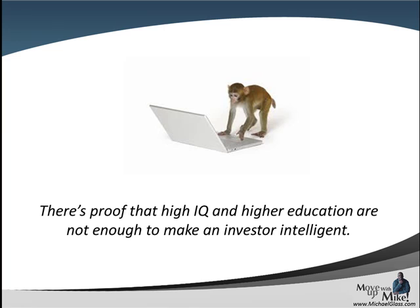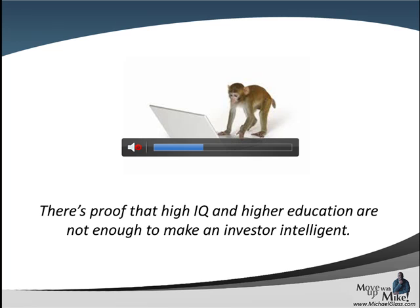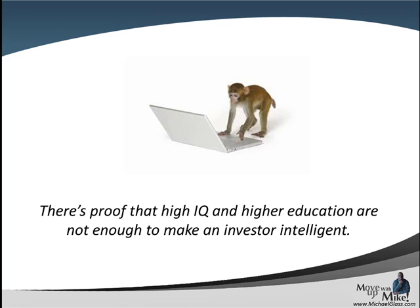As we continue to use The Intelligent Investor as our basis for our education spotlight, in the very beginning of the book they're talking about what exactly does it take to be an intelligent investor. One of the things it says is that there's proof that high IQ and higher education are not the end-all be-all for being an intelligent investor. In the book they talk about a big hedge fund that had mathematicians, MBAs, and computers, and that they spent money believing that the bond market was going to return — and ended up losing about two billion dollars. So that's simply to say that yes, it's good to have a strategy and a system, but you still have to have common sense and control of your emotions in order to enact that system properly.